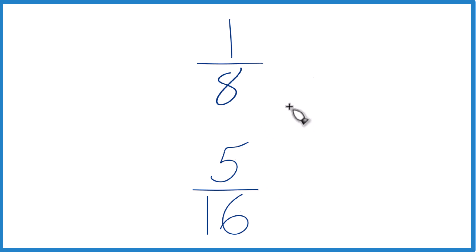We could also find a common denominator. Right now we have 16 and 8, but if these were the same, we could just compare the numerators and we'd know.